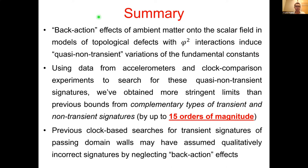To summarize: back-action effects of ambient matter onto the scalar field in models of topological defects with phi-squared interactions give rise to quasi-non-transient variations of the physical constants. By looking for these signatures using accelerometers and clock comparison measurements, we can place bounds more stringent than previous limits from complementary transient and non-transient signatures — in some cases by up to 15 orders of magnitude. Finally, previous clock-based searches for transient signatures of passing domain walls may have assumed qualitatively incorrect signatures by neglecting back-action effects, so it may be necessary to revisit and reanalyze these data sets.